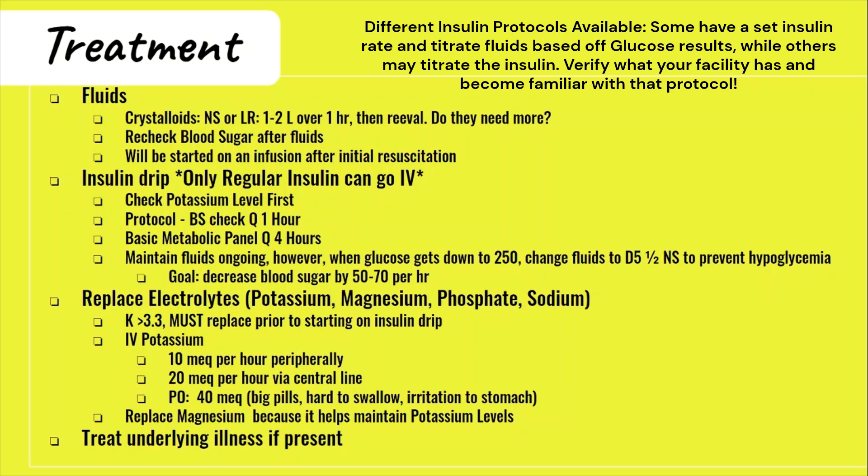Now let's talk about replacing potassium. If the potassium level is less than 3.3, you cannot start the insulin drip, so it's very important to know how to replace it. Never ever push potassium IV — you'll send your patient into a deadly cardiac rhythm. To replace it safely, we can give 10 mEq of potassium per hour peripherally, and up to 20 mEq per hour if it's through a central line. You can give up to 40 mEq by mouth, though it can be irritating to the stomach. Also, replacing magnesium is important because it helps maintain normal potassium levels.